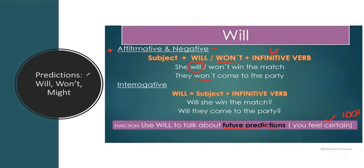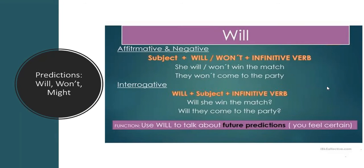The interrogative form is how we create questions. We exchange the subject with will or won't — we usually use will in most cases. So you start with will, then your subject, then your verb in the base form. For example: 'Will she win the match?' — 'Yes, she will win the match.' 'Will they come to the party?' — 'No, they won't come to the party.'